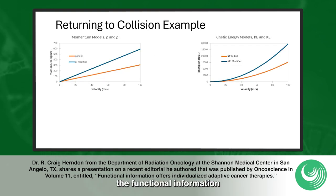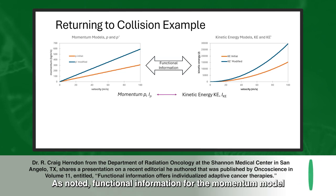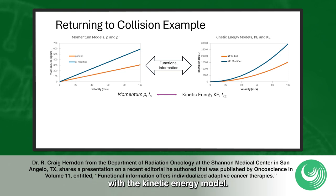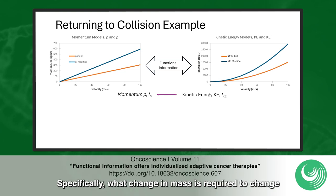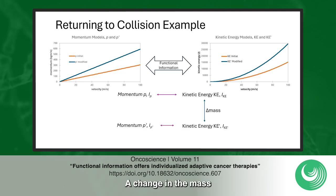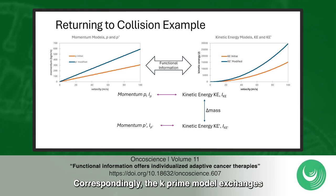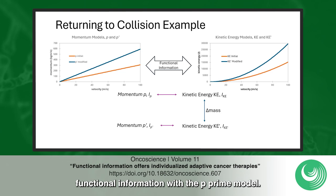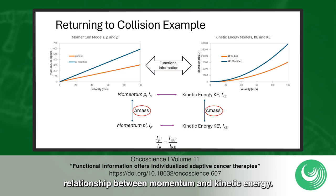Now we will apply the functional information methodology to the collision example. Here we have the graphical descriptions of the initial and modified momentum, and kinetic energy models from the previous solution. Functional information for the momentum model is exchanged through the mathematical conduit with the kinetic energy model. In this example, we are analyzing process change — specifically, what change in mass is required to change the initial orange curve to the modified blue curve in the kinetic energy graph. A change in mass results in a change to the kinetic energy model indicated by Ke'; correspondingly, the Ke' model exchanges functional information with the P' model. Information change is conserved and used to create the functional information relationship between momentum and kinetic energy.